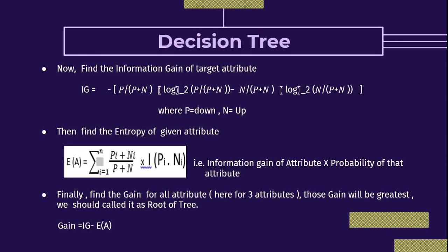The next step is to find the information gain. The standard formula for information gain is: IG = −[p/(p+n) × log₂(p/(p+n)) + n/(p+n) × log₂(n/(p+n))]. Here there are two variables: p for positive and n for negative. The target attribute is always binary — true or false, yes or no, one or zero.